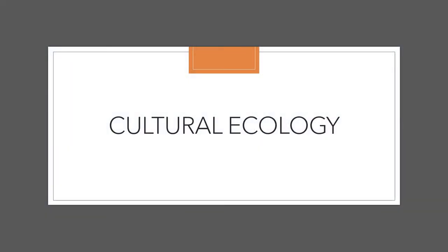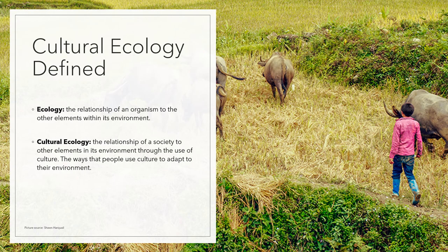The idea of subsistence strategies comes to us from a branch of anthropology called cultural ecology. Cultural ecology is to culture what ecology is to biological organisms. Ecology studies the relationship of an organism to the other elements within its environment, whereas cultural ecology studies the relationship of a society to other elements in its environment through the use of culture — in other words, the ways that people use culture to adapt to their environment.